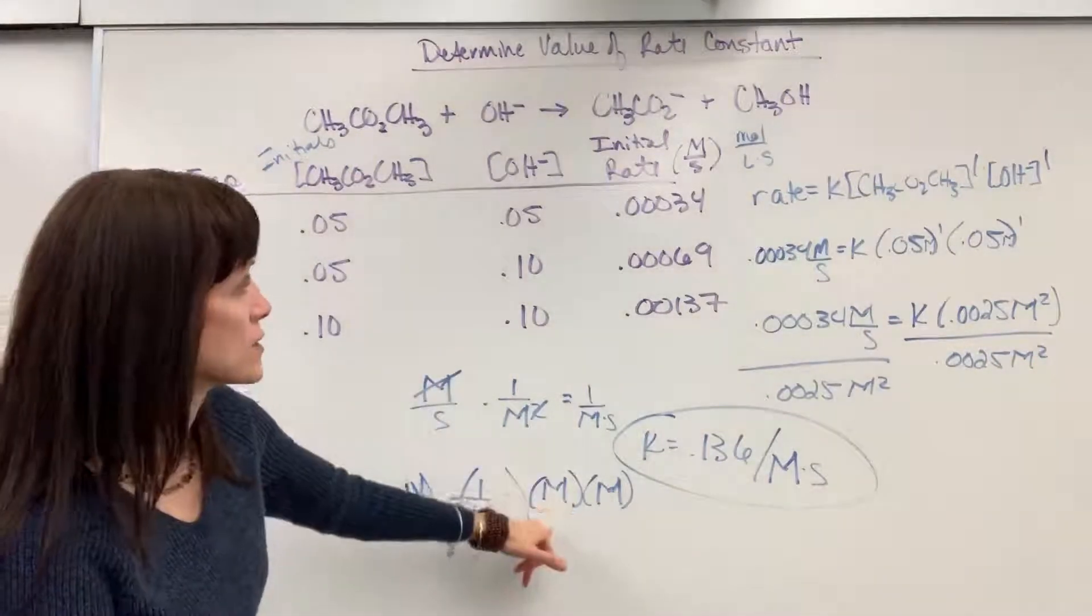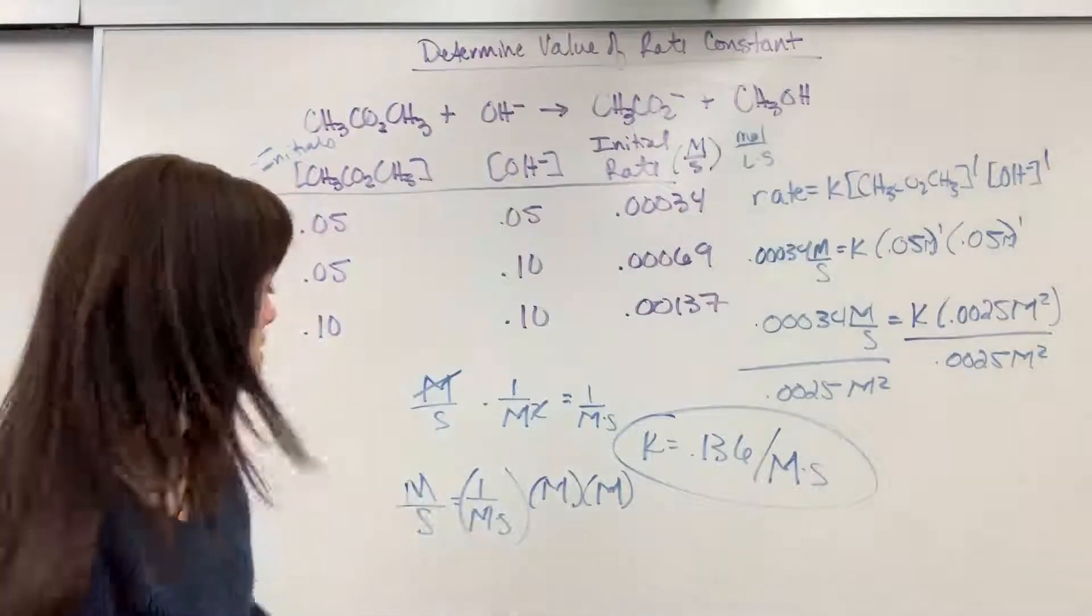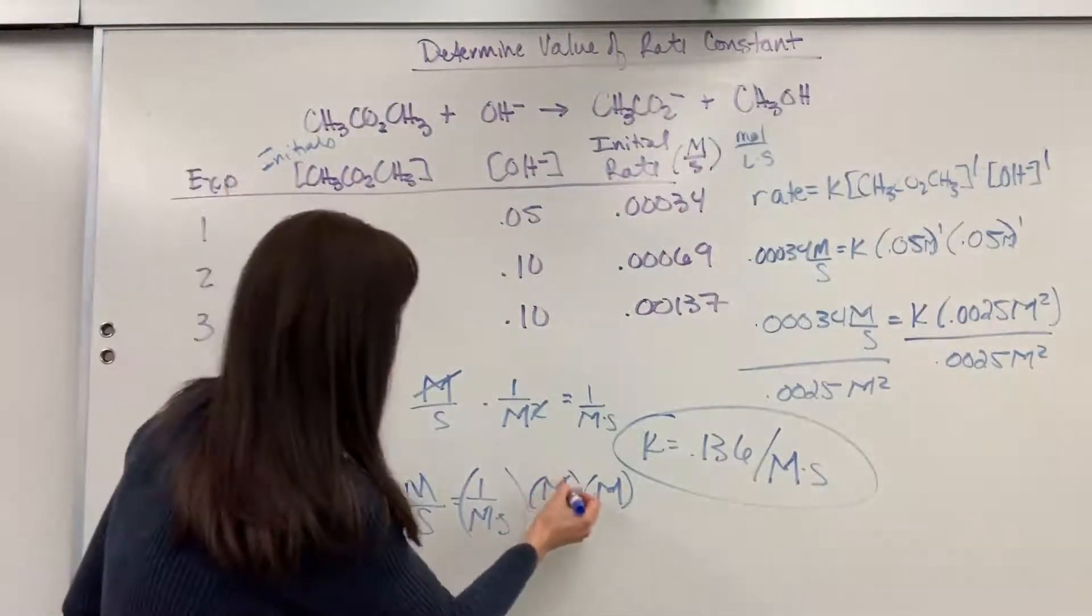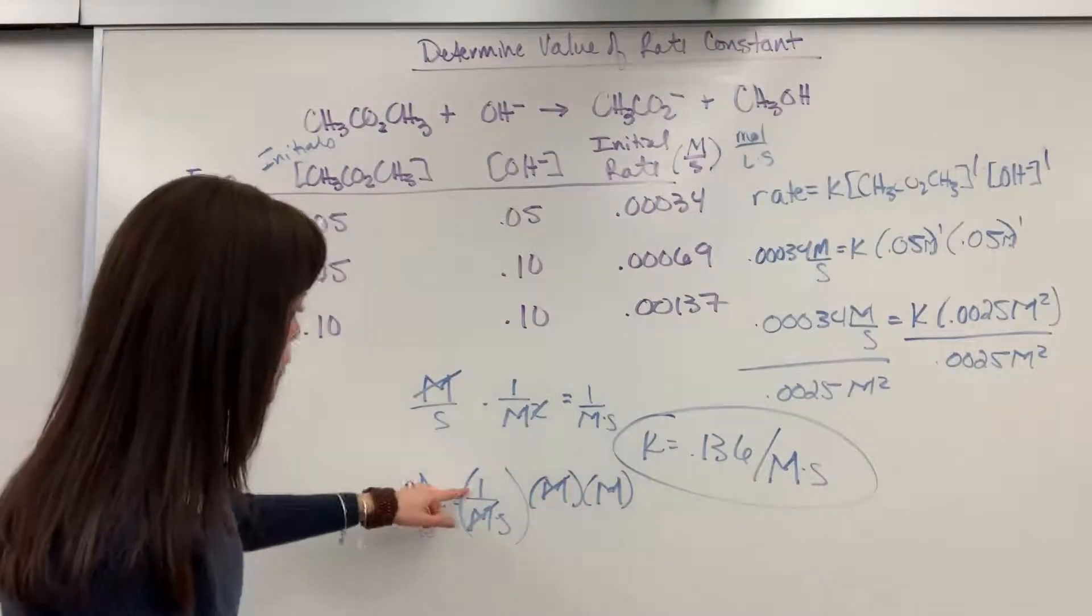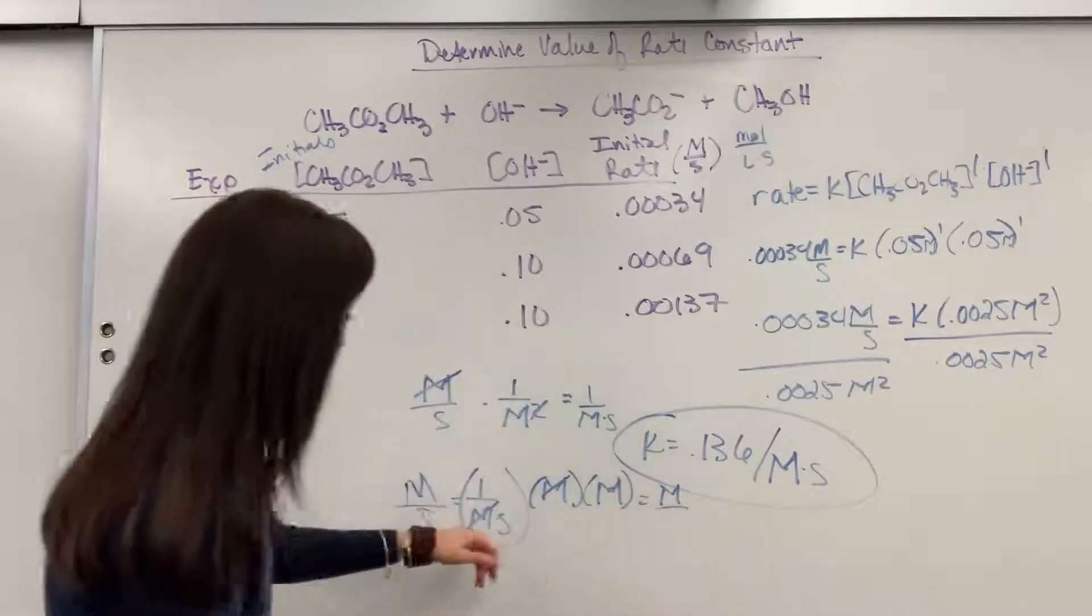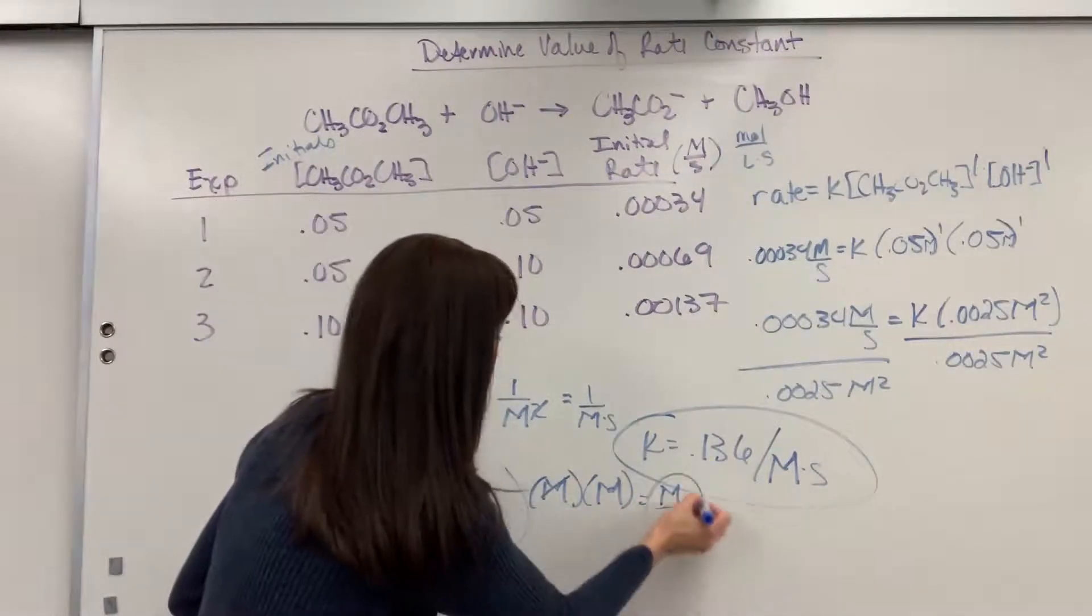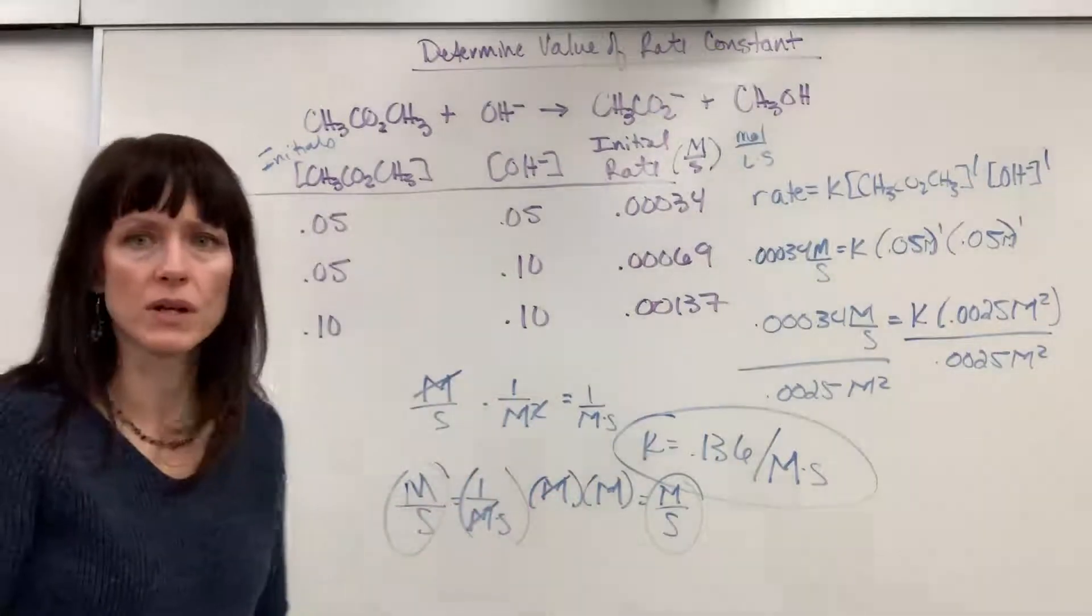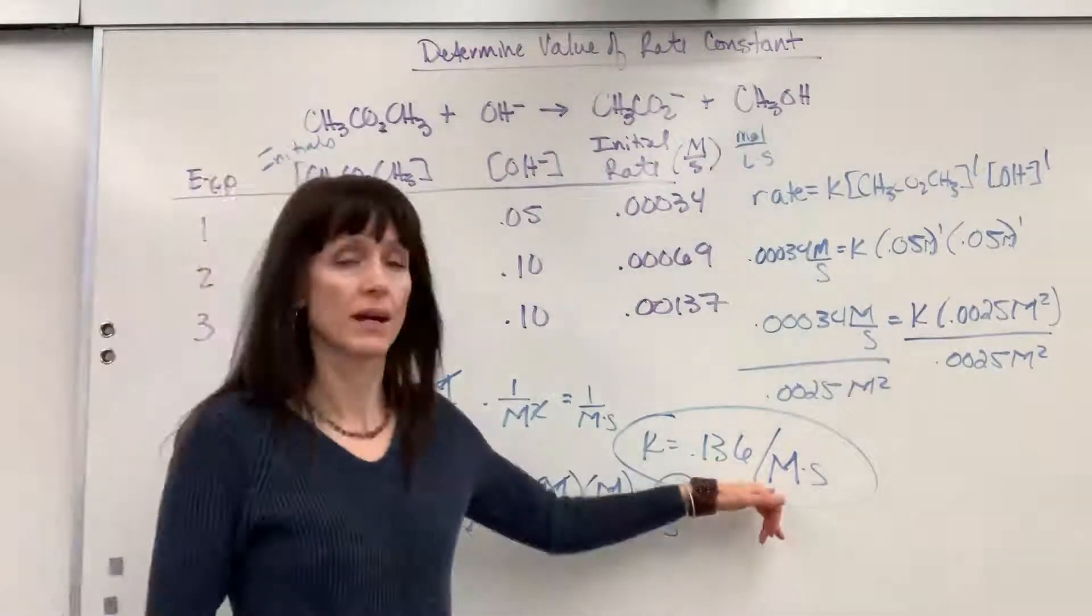That's my K, concentration of methyl acetate, concentration of hydroxide. There's my units. Well, notice molarity cancels there and there. So when I go 1 times molarity, that's molarity, and I just have seconds on the bottom. Oh, it works. Molarity per second, molarity per second. So that is the correct unit right there.